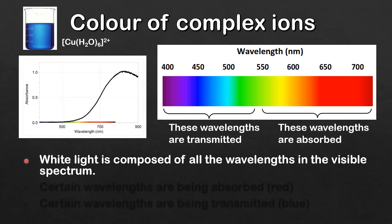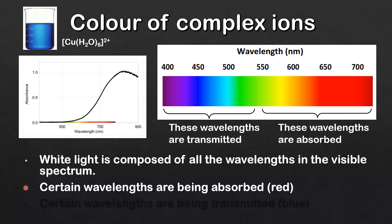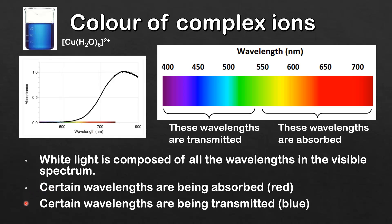So just to recap, white light is composed of all the wavelengths in the visible spectrum. When white light passes through the copper sulfate solution certain wavelengths are being absorbed — that's mainly red — and certain wavelengths are being transmitted — that's mainly blue. The reason we see copper sulfate solution as being blue is because the blue wavelengths of light are being transmitted.